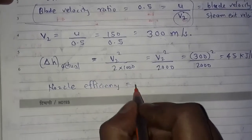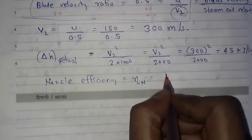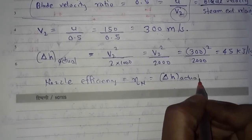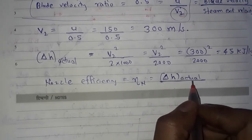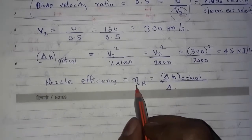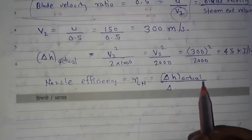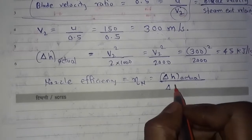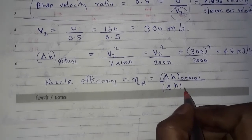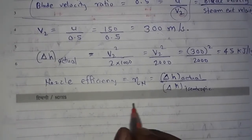As we know, nozzle efficiency eta_n is equal to actual change in enthalpy upon isentropic change in enthalpy — that is delta h actual upon delta h isentropic.